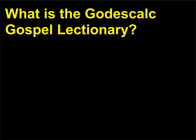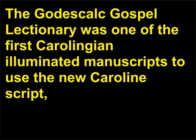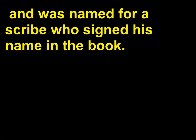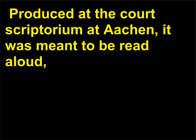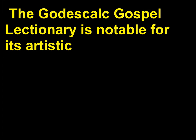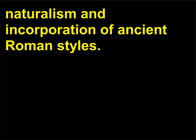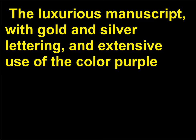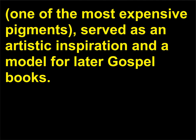What is the Godescalc Gospel Lectionary? The Godescalc Gospel Lectionary was one of the first Carolingian illuminated manuscripts to use the New Caroline script, and was named for a scribe who signed his name in the book. Produced at the court scriptorium at Aachen, it was meant to be read aloud and commemorated the 781 baptism of Charlemagne's son. It is notable for its artistic naturalism and incorporation of ancient Roman styles. The luxurious manuscript, with gold and silver lettering and extensive use of the color purple — one of the most expensive pigments — served as an artistic inspiration and a model for later gospel books.